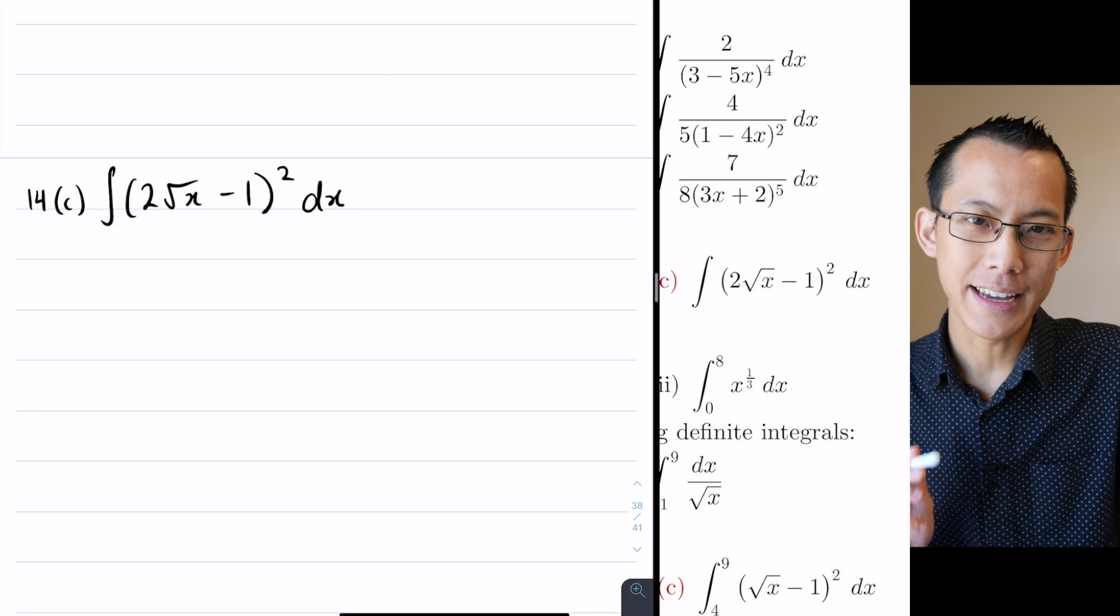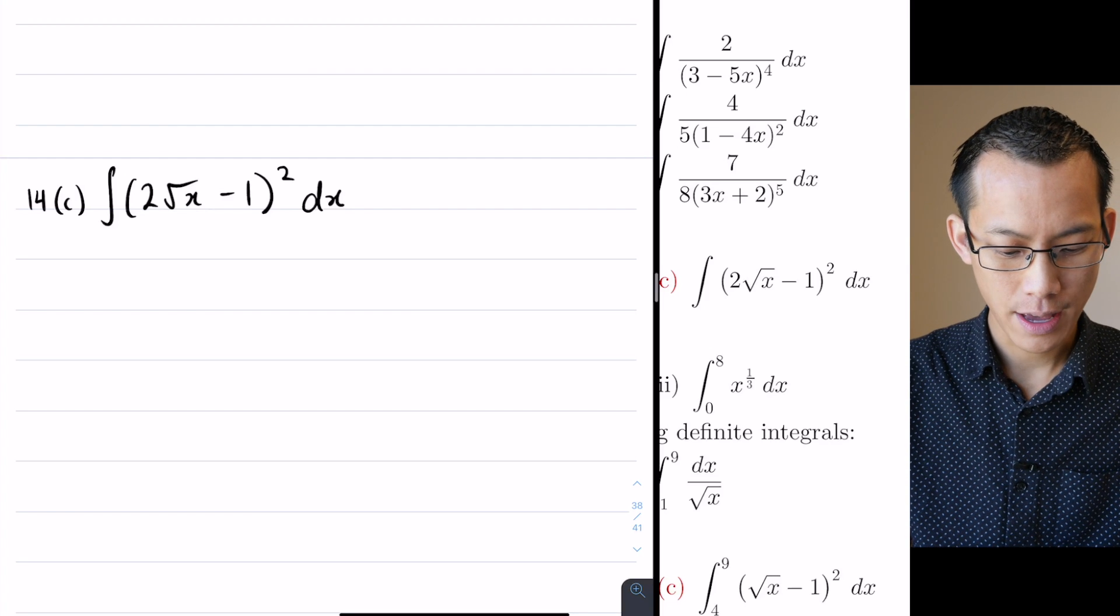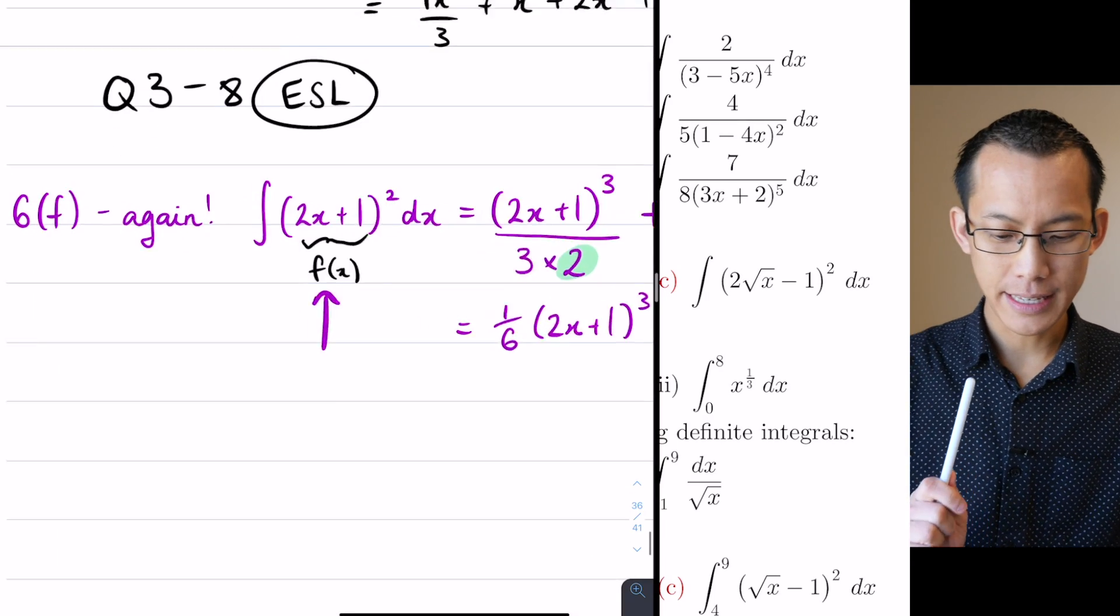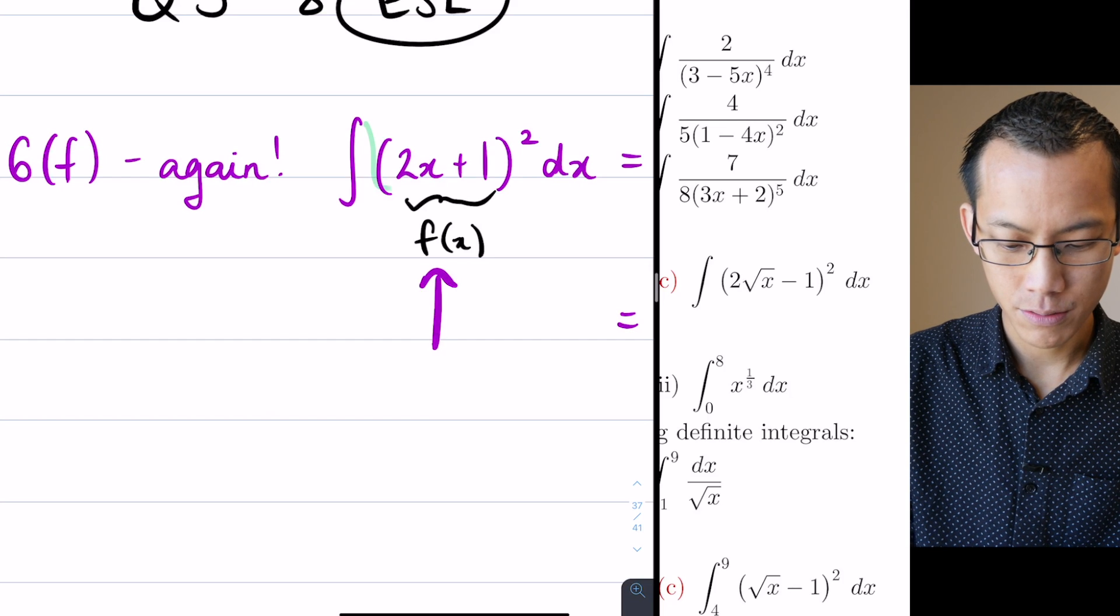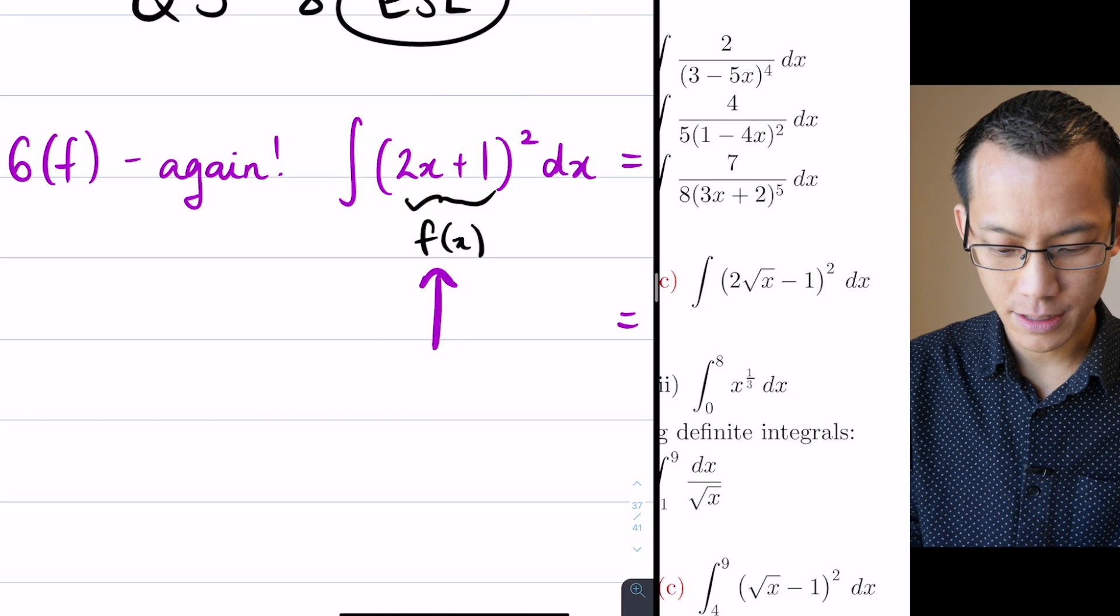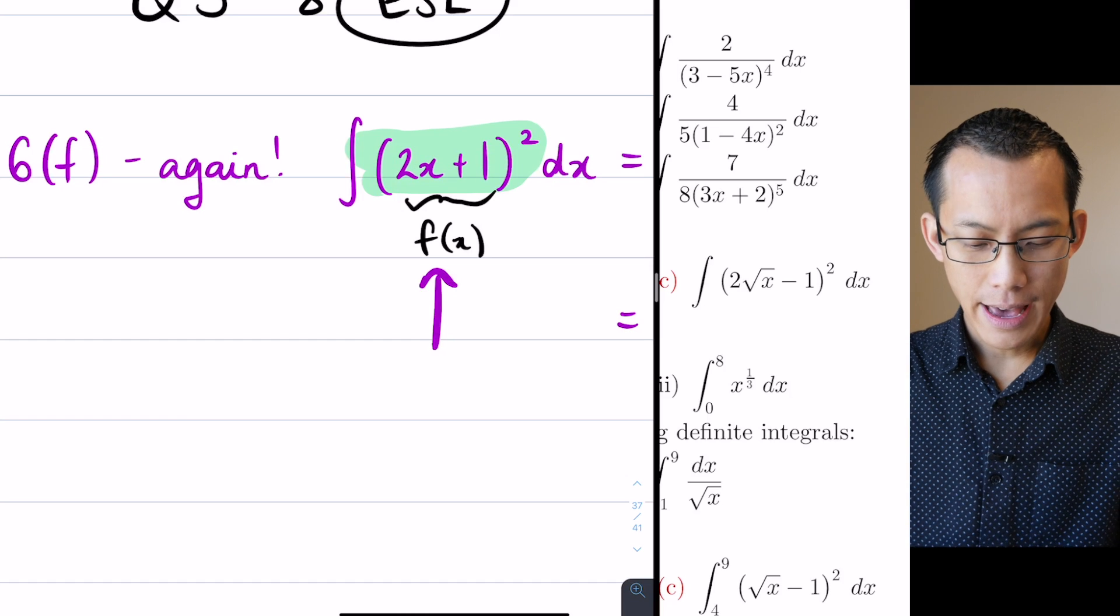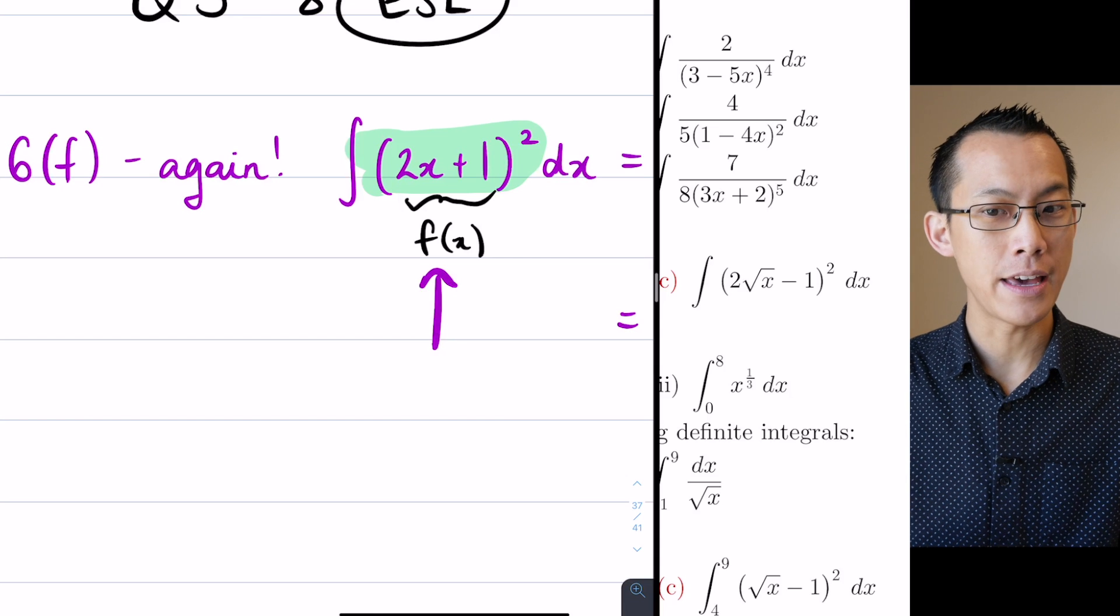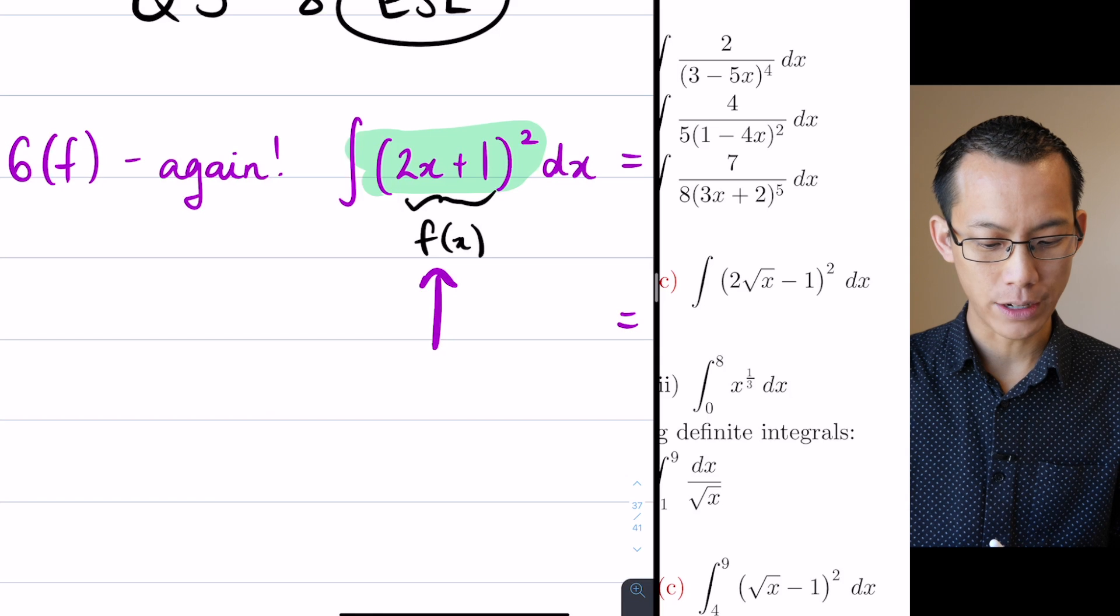Why is it a bad idea to try and use the reverse chain rule on this? Well, let's just call back to how I had a look at question 6f. I had a look at this guy, and I said, look at the integrand. Just to remind you, the integrand is this guy here. This is the integrand here, 2x plus 1 all squared. And I said, that thing being squared, 2x plus 1, what's the inside derivative there? It's 2, it's just a constant. And that's why I can use reverse chain rule, we're good to go.